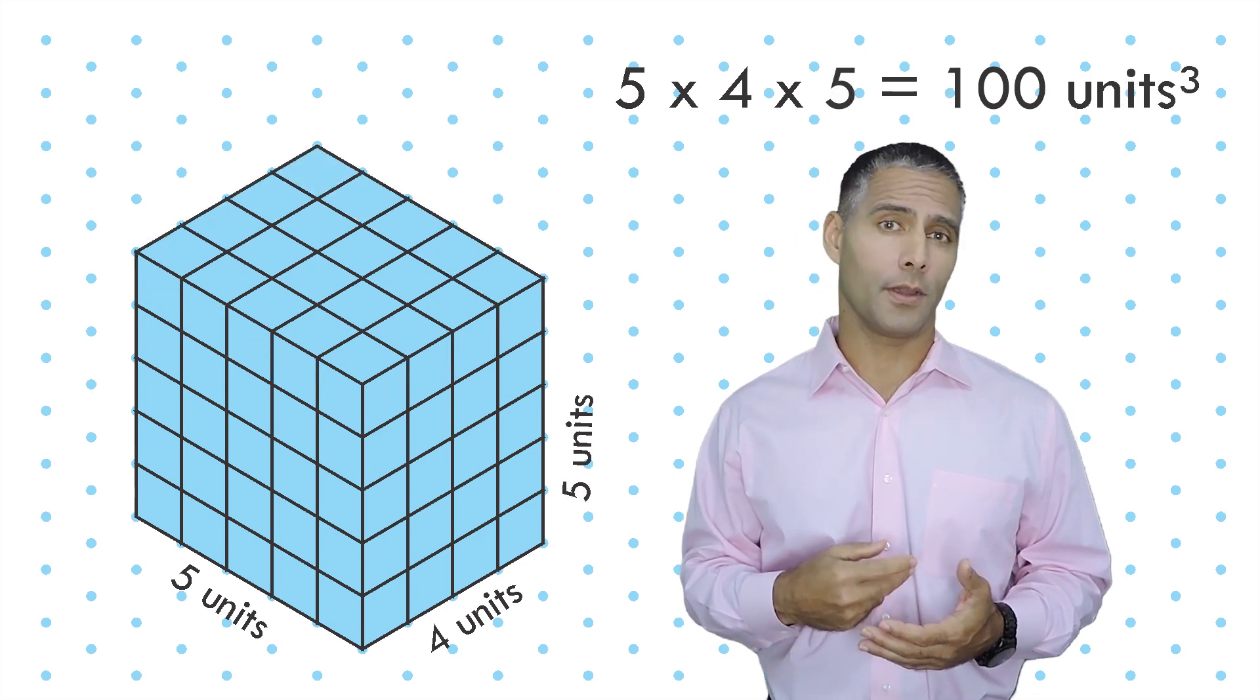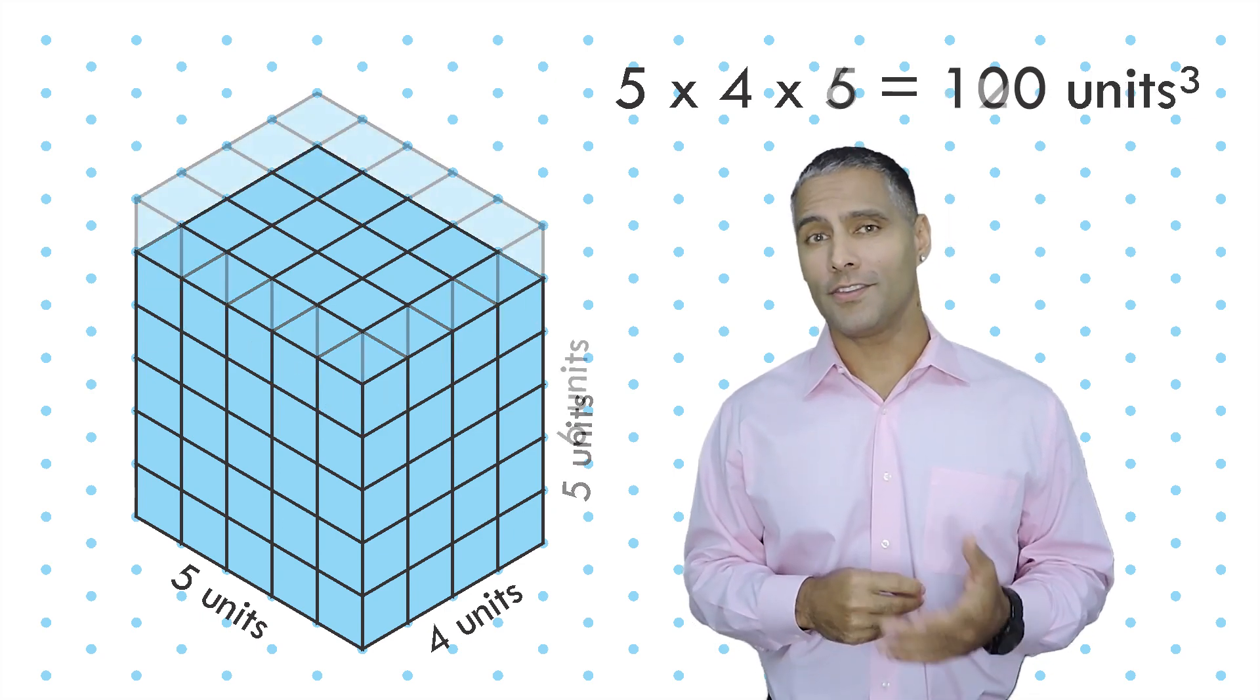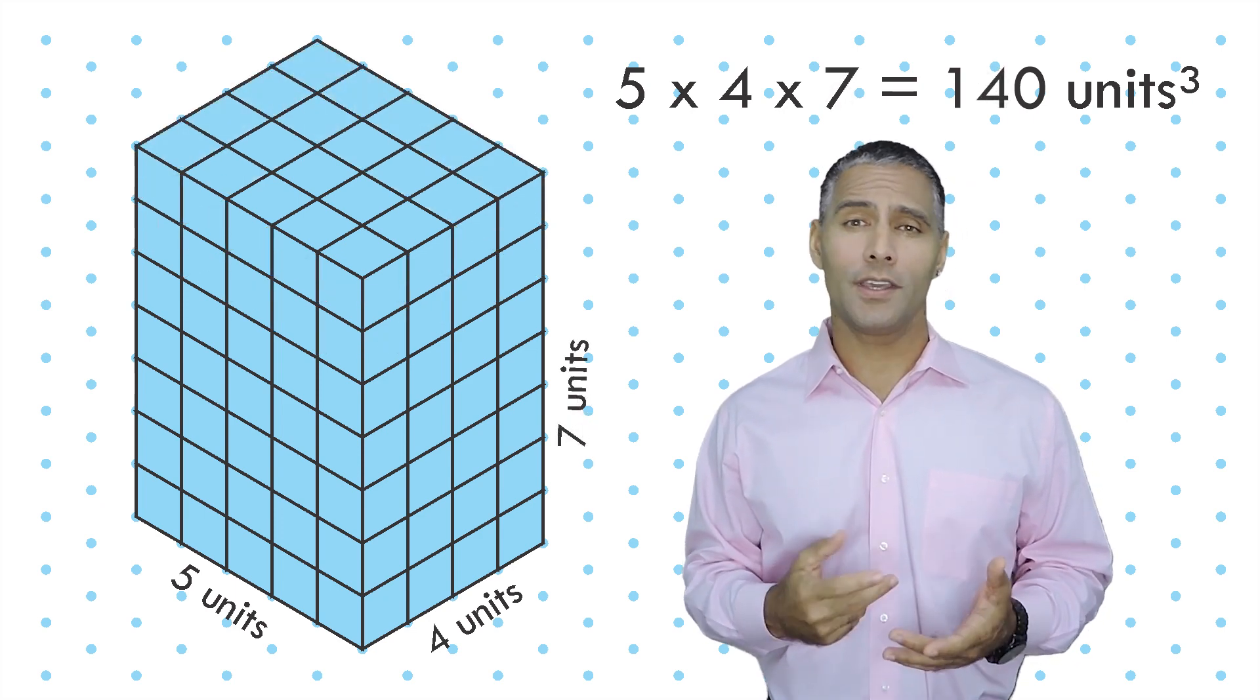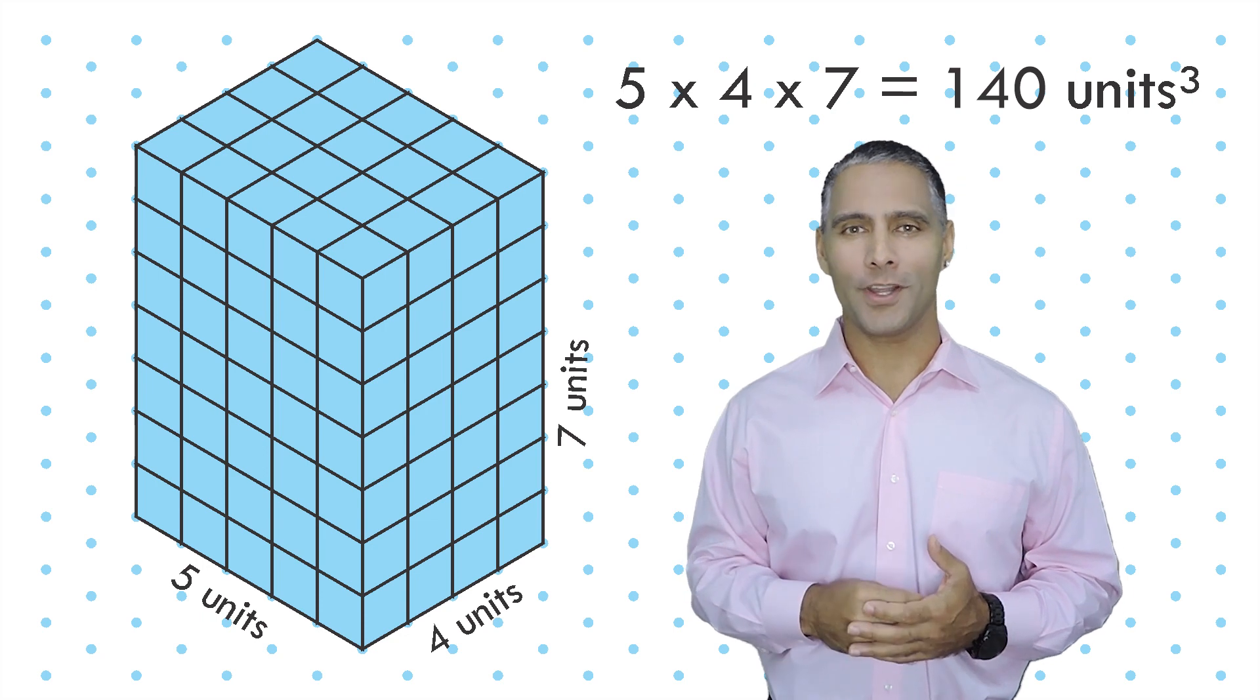A fifth layer would be a volume of one hundred cubic units. A sixth layer yields a hundred twenty cubic units. And a seventh layer would give us a total of one hundred forty cubic units.